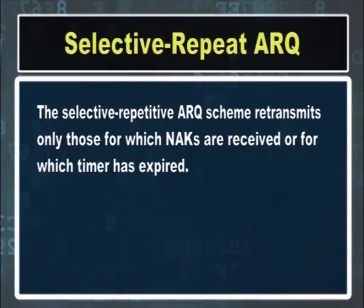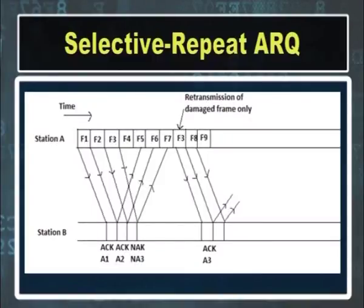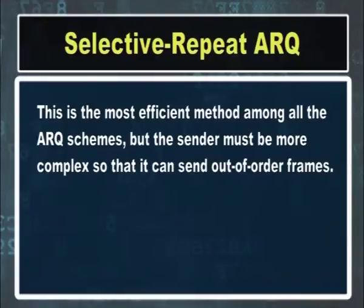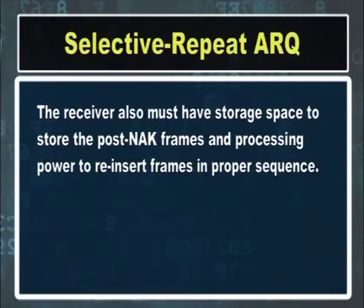The last ARQ scheme is selective repeat ARQ. The selective repeat ARQ scheme retransmits only those frames for which NAKs are received or for which the timer has expired. This is the most efficient method among all ARQ schemes, but the sender must be more complex so that it can send out-of-order frames. The receiver must also have storage space to store the post-NAK frames and processing power to reinsert frames in the proper sequence.